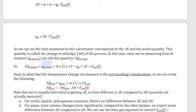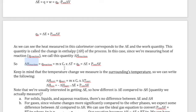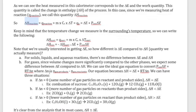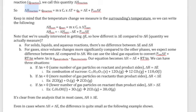We measure the surroundings' temperature to calculate q of the surroundings. Whatever happened to the surroundings is the opposite of the system: delta H of the system equals negative delta H of the surroundings. That gives the delta H of the reaction. Now, what's the difference between delta H and delta E? Delta H equals delta E plus p-external times delta V — so how big is p-external delta V? If it's nearly zero, delta H and delta E are essentially identical.